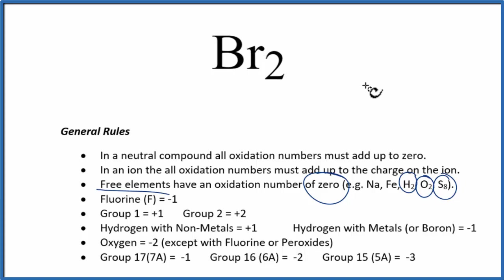Now, if we had something like, for instance, let's say HBr, hydrobromic acid. In this case, bromine would have an oxidation number that's non-zero.